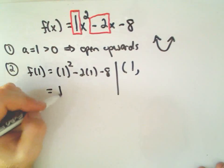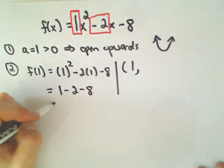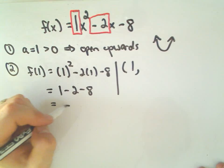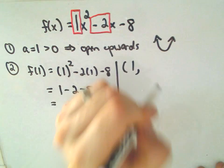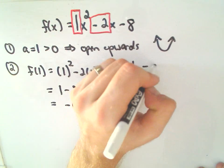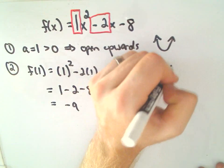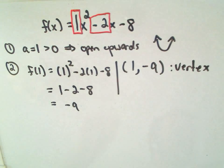So that's 1 - 2 - 8. And that looks like the value negative 9. So when you plug 1 in, we get out the value negative 9. And this will be our vertex. That will be useful for us as well.